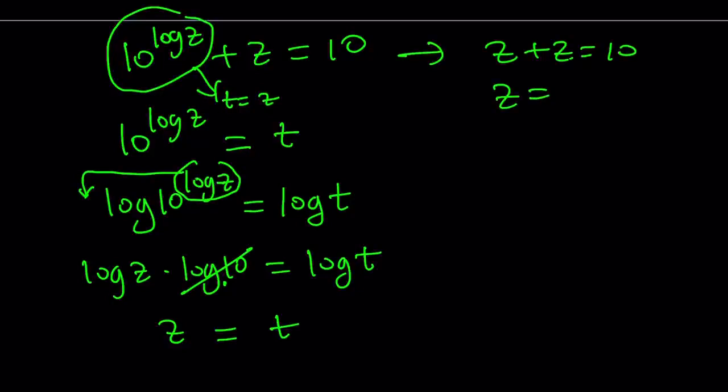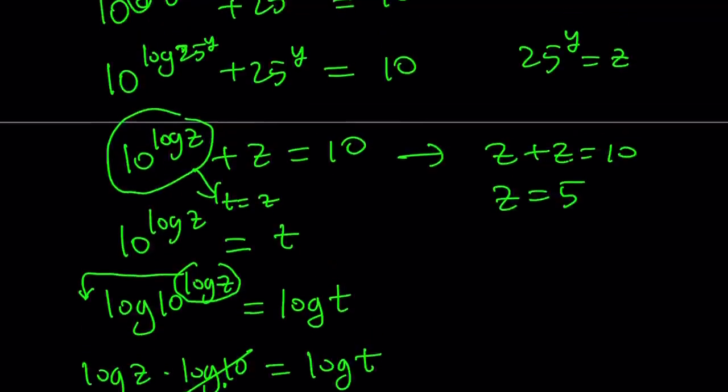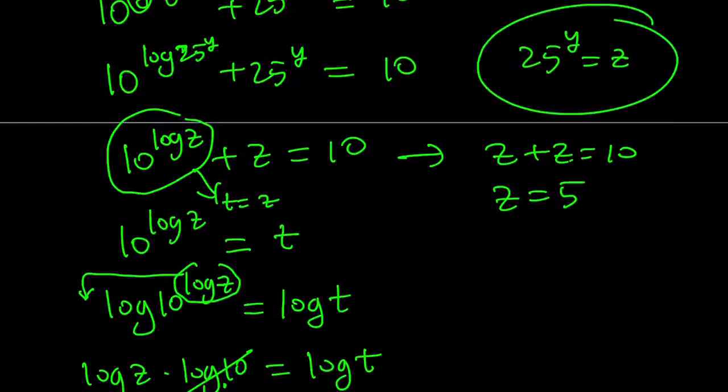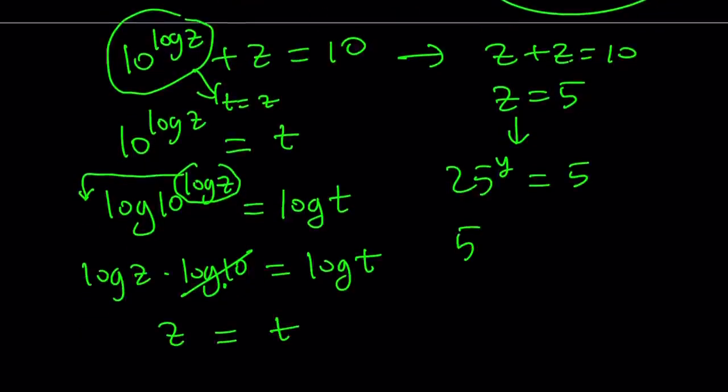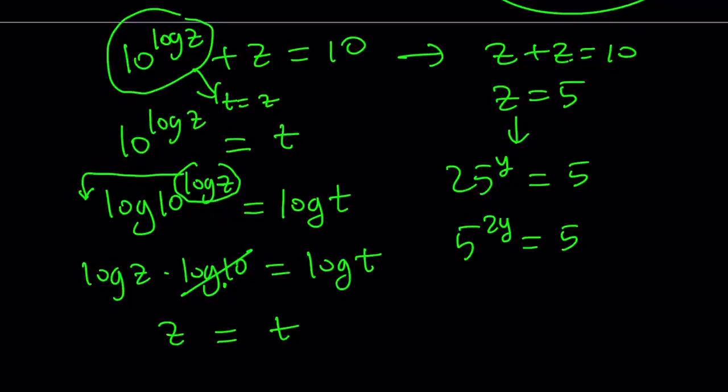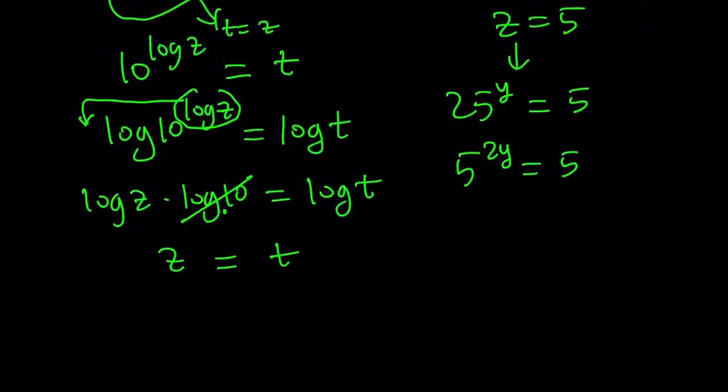z plus z equals 10. So z equals 5 because 2z, 2z or not 2z. Okay, z equals 5, but what is z? Z is 25 to the power y. So I can write it as 25 to the power y is equal to z, which is 5. And now 25 is 5 to the second power. So this becomes 5 to the power 2y equals 5.